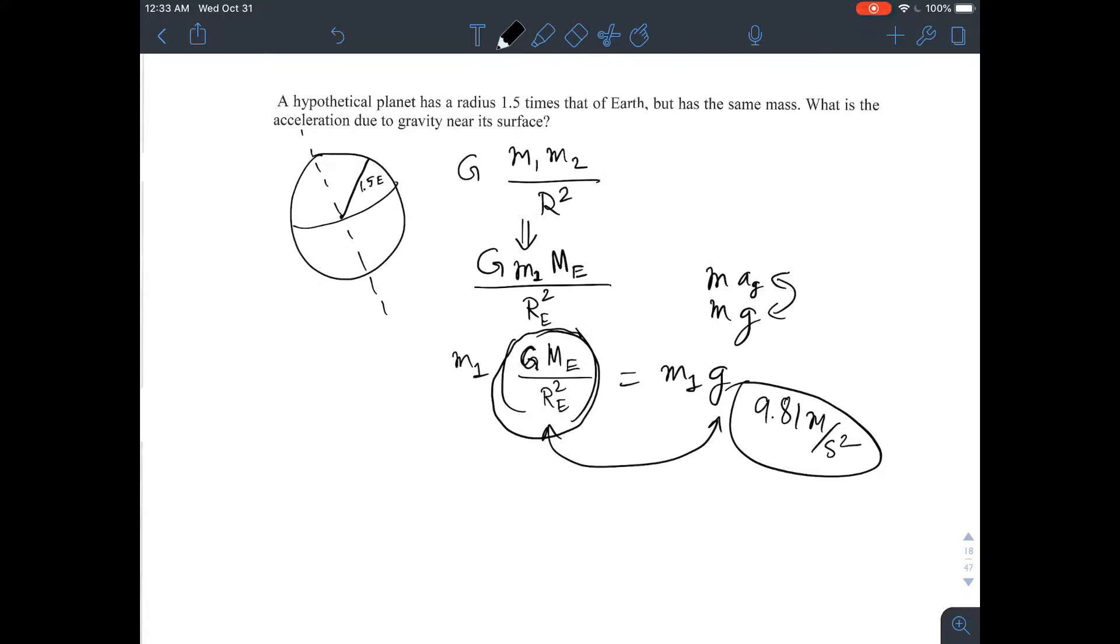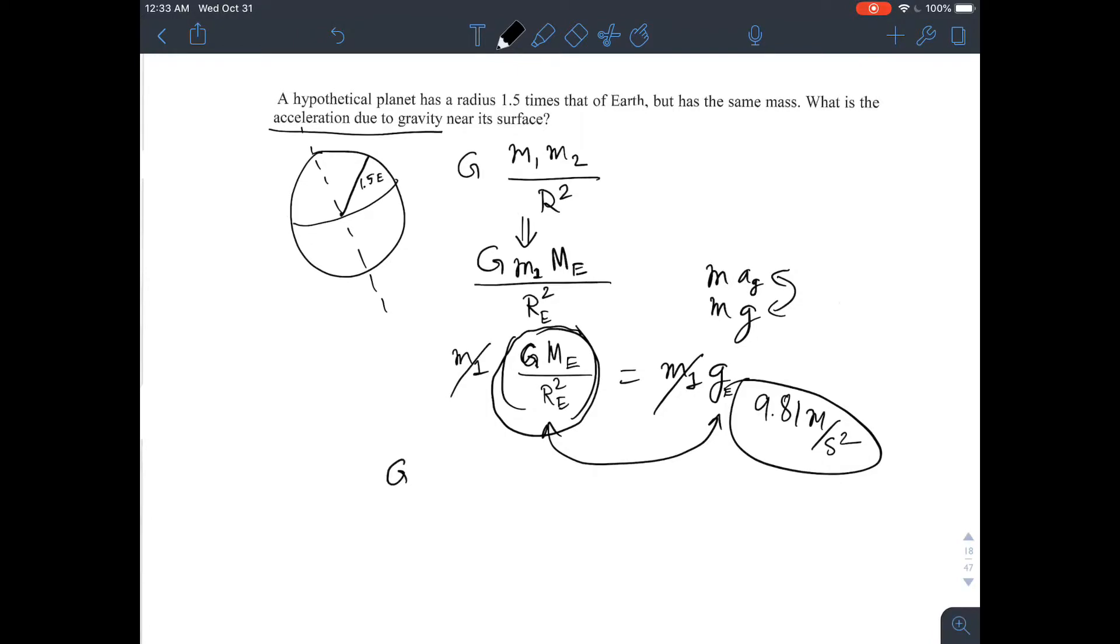So now, in this problem, we have a planet where the mass on the surface doesn't matter for calculating g. They want to know the acceleration due to gravity. Our acceleration due to gravity on Earth is g, which is 9.81. The only difference here is the radius. We still have G, the gravitational constant. The mass of this new planet is still the same as Earth's mass, but the radius is 1.5 times the radius of Earth squared, and they want to know what this new g prime is.